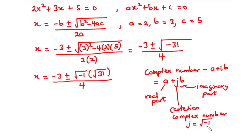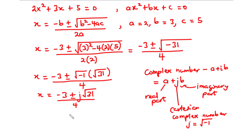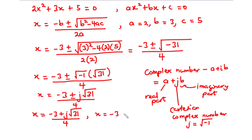Since j is equal to the square root of negative 1, we substitute that in and get negative 3 plus or minus j times the square root of 31, all divided by 4. Since we need two values of x, we have x equals negative 3 plus j times the square root of 31 all divided by 4, or x equals negative 3 minus j times the square root of 31 all divided by 4.